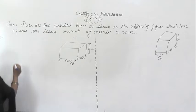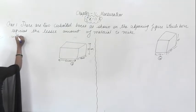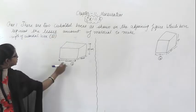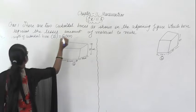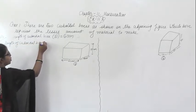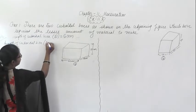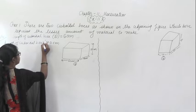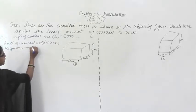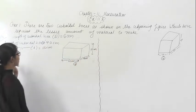For this box we will find out the length, breadth, and height. Let's take the length of the cuboidal box — that is L, which is 60 centimeters. Similarly, breadth is 40 centimeters. And the height of this cuboidal box, H, is 50 centimeters. Length, breadth, and height are given to you. You have to find out the surface area.